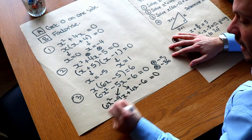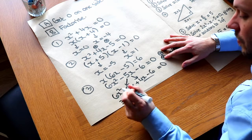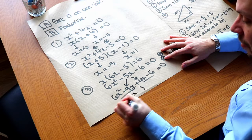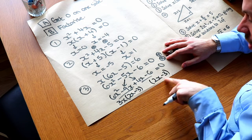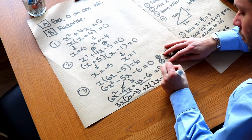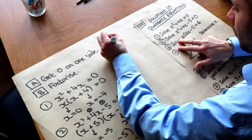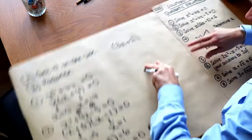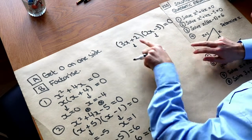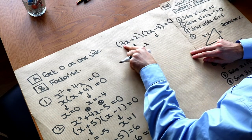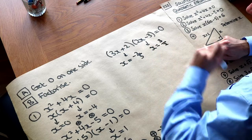We underline each of the two halves and factorise each half independently. The common factor of the first half is 3x: 3x times 2x gives 6x squared, and 3x times minus 3 gives minus 9x. Duplicating the bracket for the second half, the outside factor is plus 2. So our two brackets are 2x minus 3 and 3x plus 2, giving 3x plus 2 times 2x minus 3 equals 0. The solutions are x equals minus two-thirds and x equals three-halves.